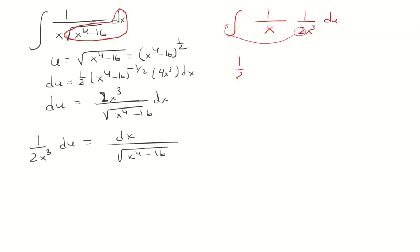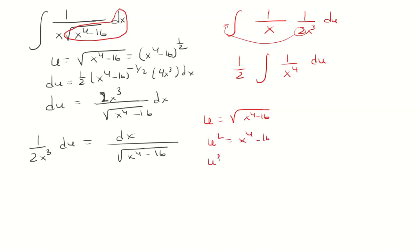That gives us one-half times 1 over x times 1 over x cubed, which is 1 over x to the fourth. Recall that u equals the square root of x to the fourth minus 16, so if we square both sides and add 16, we can solve for x to the fourth — giving us x to the fourth equals u squared plus 16.